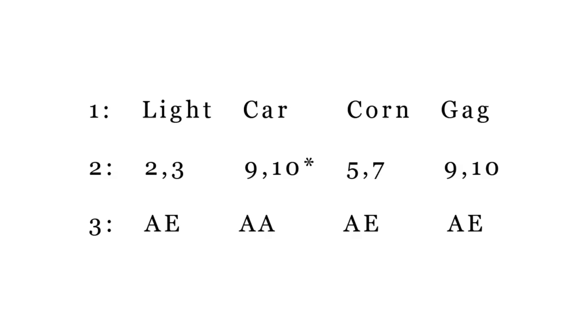So, while it intuitively doesn't seem to make much sense, if you kind of recite it in your head as light car corn gag, 2, 3, 9, 10, 5, 7, 9, 10, A-E, A-A, A-E, A-E, and you write them out strictly as these three lines, you might be able to pick up the pattern, and it might stick in your head.